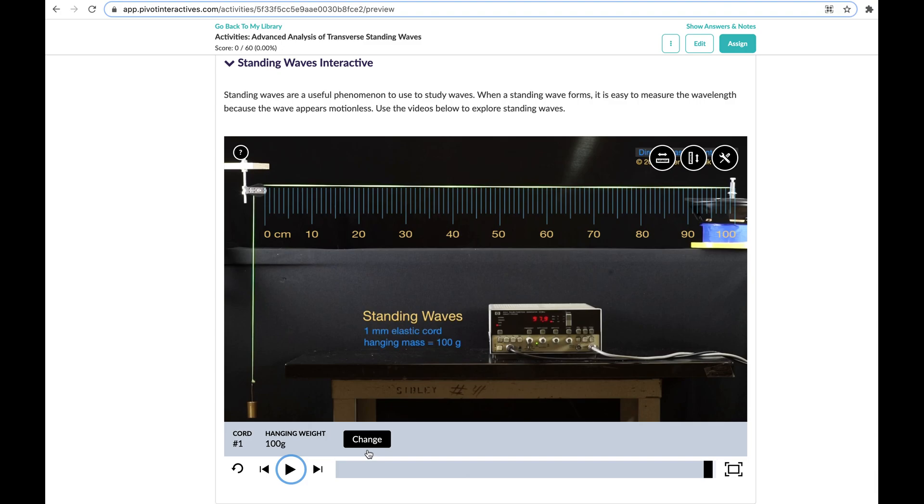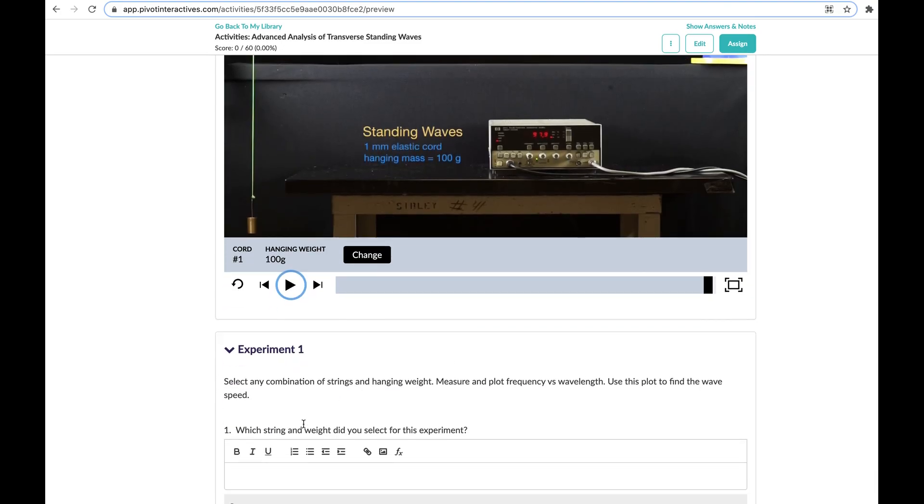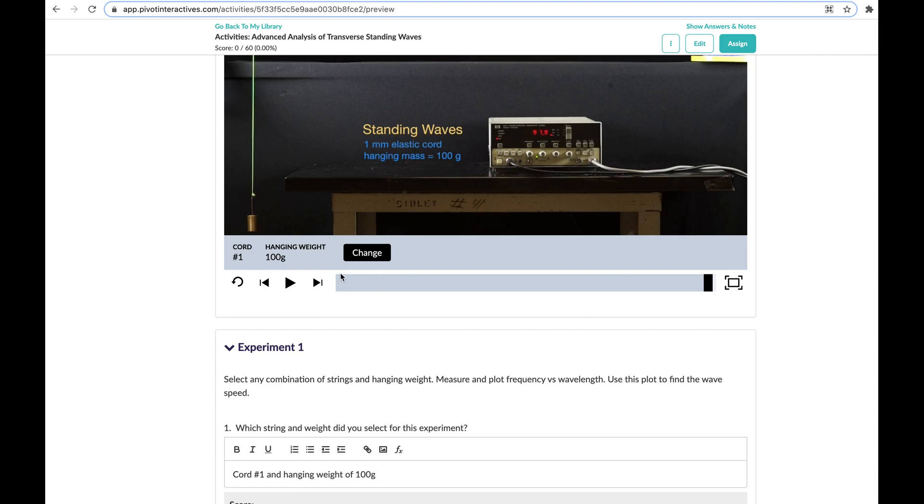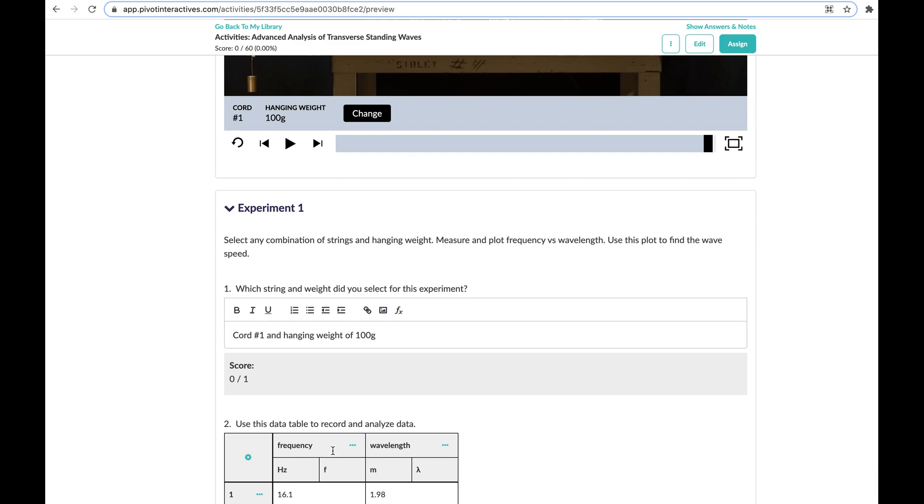So what we're going to do is we are going to make a table. So first it says, which string and weight did you select for this experiment? For this one, I'm using chord number one and hanging weight of 100 grams. That becomes important for us later. So you just want to make sure you fill out the correct information here so that if you have to save and come back, you know where you left off. So we're going to make our table with frequency on the x and that's going to be in Hertz with frequency of F and then wavelength, which I'm going to measure in meters.